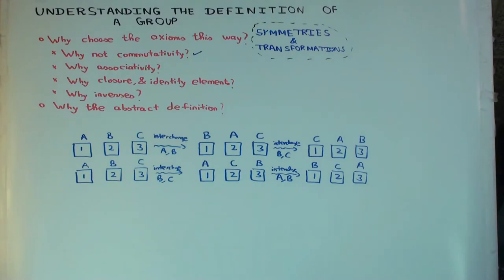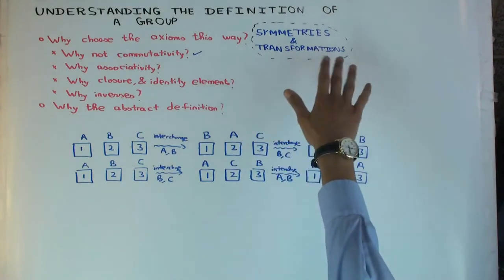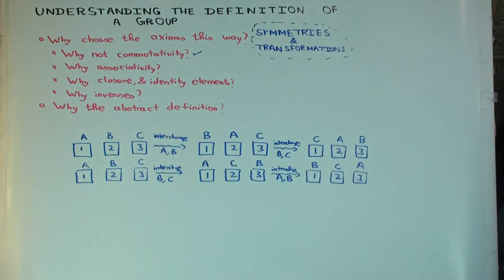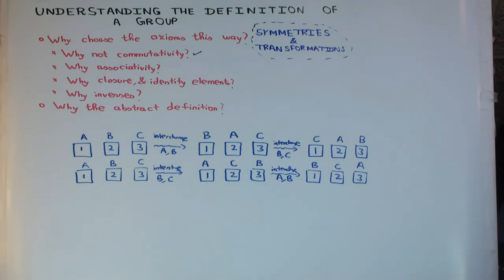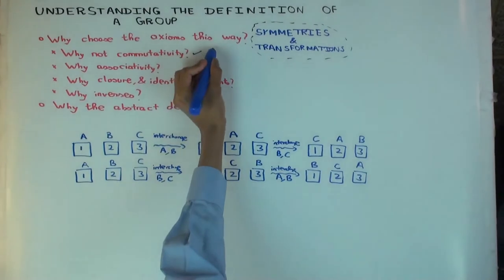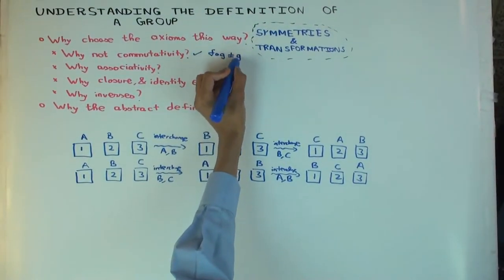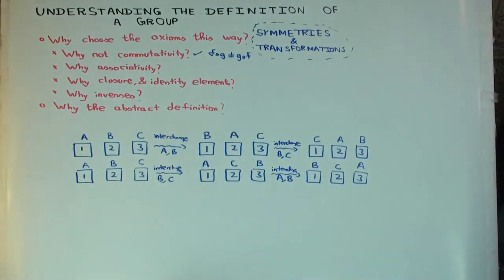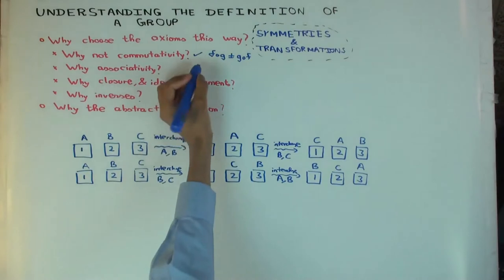Now why associativity? If we're not assuming commutativity, why do we assume associativity? Well, remember these groups are meant to capture transformations of a structure, which means functions from a set to itself. Function composition is how you multiply elements of the group. Now is function composition commutative? Is f composed with g the same as g composed with f? No — and that's why we don't have commutativity. But when you associate functions, they always associate.